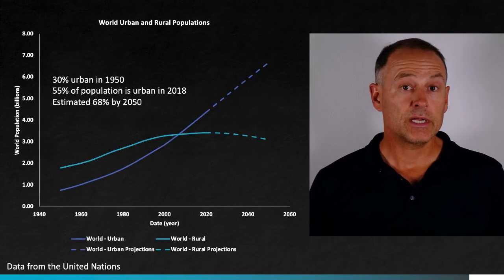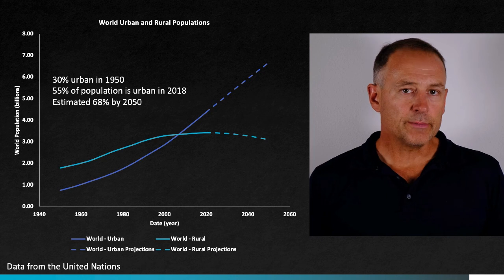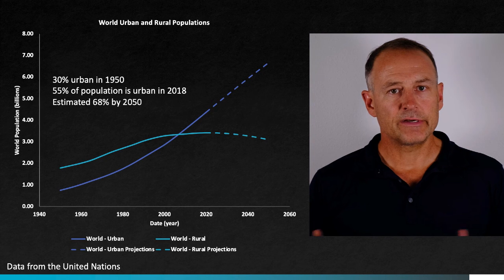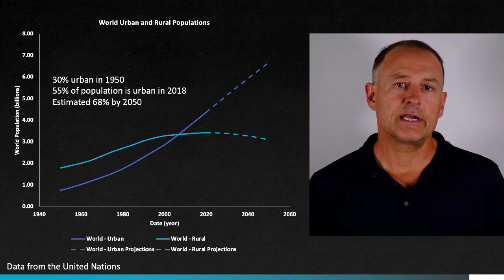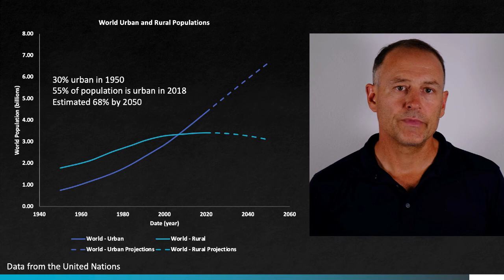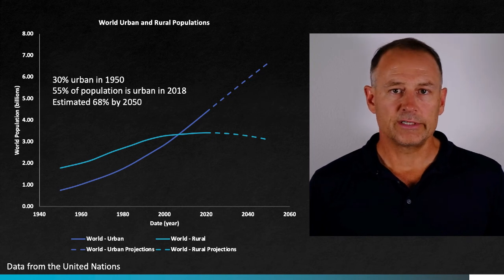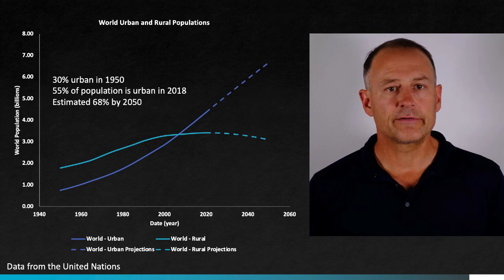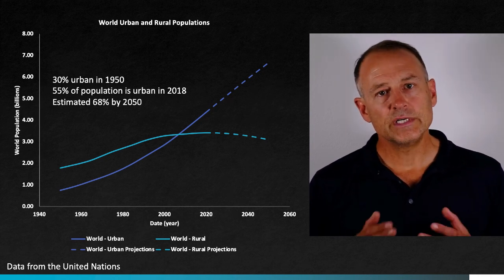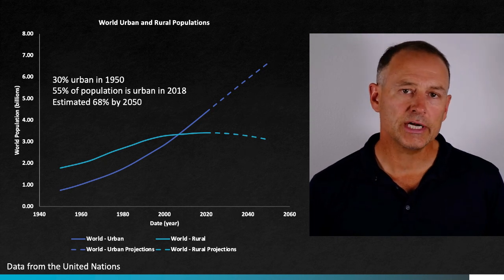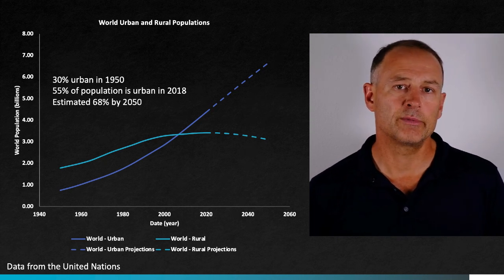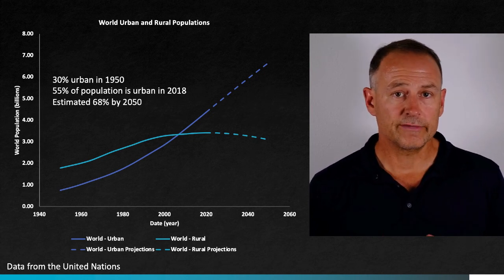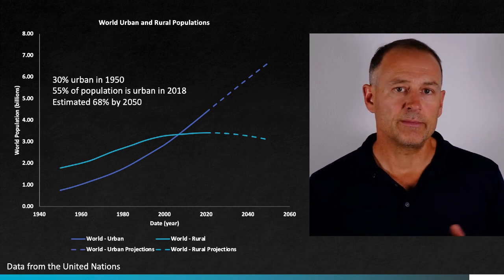The world has changed quite a lot from 1950 to the present. Only 30% of the global population lived in urban areas in 1950, meaning 70% of people lived in rural areas outside of cities and towns. Today, that number globally is about 55%. The United Nations projects that 68% of the global population will be in cities by 2050. A huge fraction of that population will live in what are called megacities, some of which will exceed 20 million people.